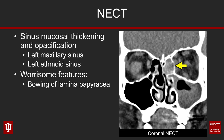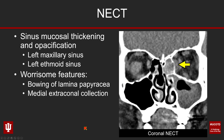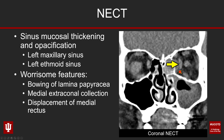First, we have bowing of the lamina papyracea, that medial orbital wall. If you look where the yellow arrow is pointing, you can see it's bowed outward. Compare this outward bowing to the contralateral side where it's still a bit concave. That indicates we're looking at a sinus that is under pressure, and sinuses under pressure are never happy. On top of that, we have an extraconal collection hovering over that lamina papyracea in the extraconal space, causing mass effect and displacing the medial rectus muscle laterally.